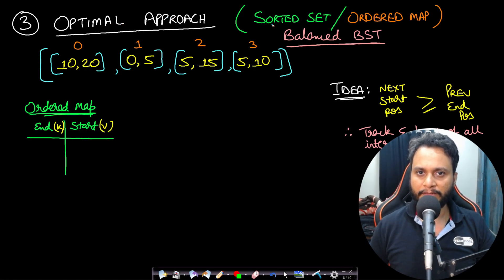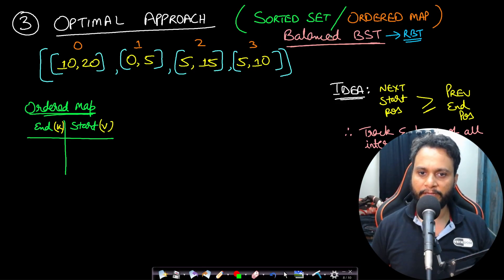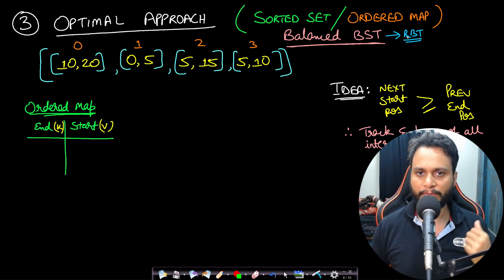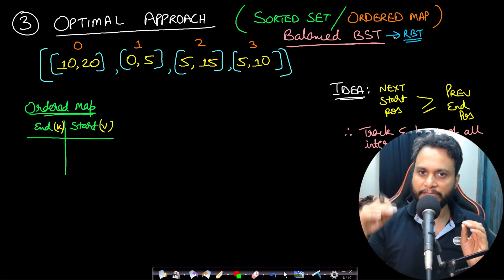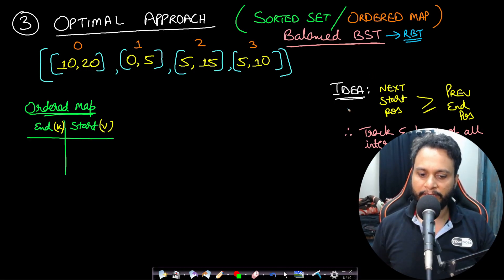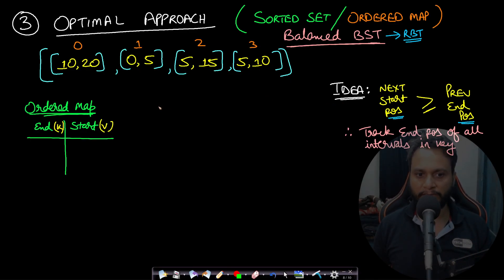In the optimal approach we use either a sorted set or an ordered map — both are implementations of a balanced BST, specifically red-black trees. These trees guarantee O(log n) height, so all operations including insertion and searching are O(log n). The key idea is: the next starting position will always be greater than or equal to the previous end position.